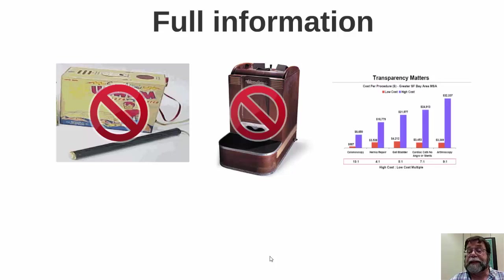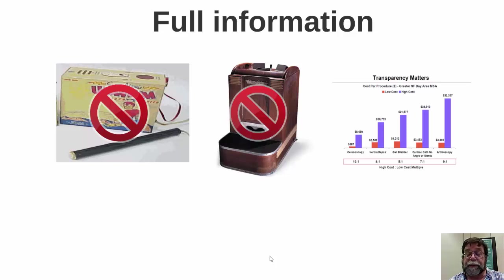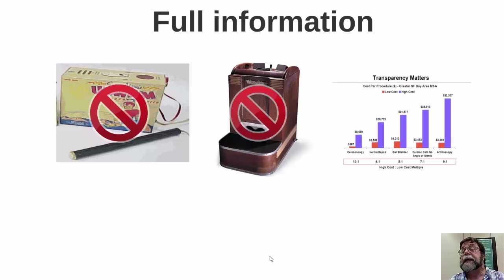Another area in which we don't have perfect information is in the market for healthcare. If you go to a surgeon who recommends a particular surgery or medical procedure, you're probably not going to shop around for the lowest bidder. One side effect of this is a lot of price dispersion. This chart depicts the dispersion between the lowest and highest prices in the greater San Francisco Bay Area, where the highest-priced procedures are sometimes ten times as much as the lower-priced ones.